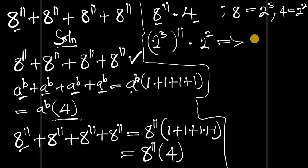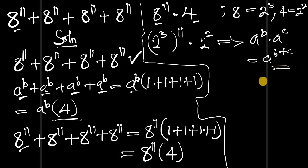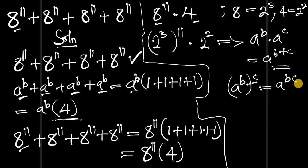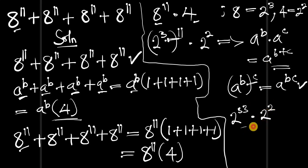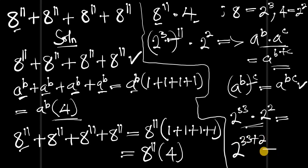We apply the identity: (a to the power of b) to the power of c equals a to the power of b times c. So 3 times 11 gives 33, meaning we have 2 to the power of 33, times 2 to the power of 2. Then using the rule a^b times a^c equals a to the power of b plus c, we get 2 to the power of 33 plus 2, which equals 2 to the power of 35.